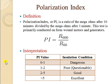The next test is the polarization index, or PI. Similar to DAR, you take a ratio — but here it is R600 divided by R60, that is insulation resistance at 600 seconds (10 minutes) divided by insulation resistance at 60 seconds. This test is primarily conducted on form-wound motors and generators. Interpretation: 0 to 1 is dangerous, 1 to 2 is poor, 2 to 5 is good, and greater than 4 or 5 is excellent insulation.